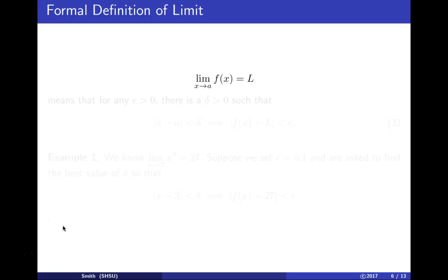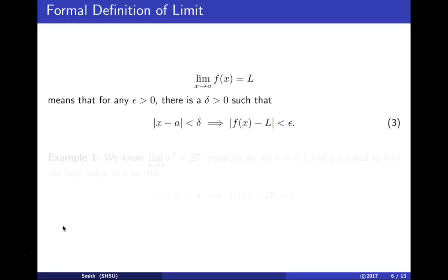So this limit means that for any epsilon greater than 0 there's a delta greater than 0 so that as long as the distance from x to a is smaller than delta, then the distance from f of x to L is smaller than epsilon.